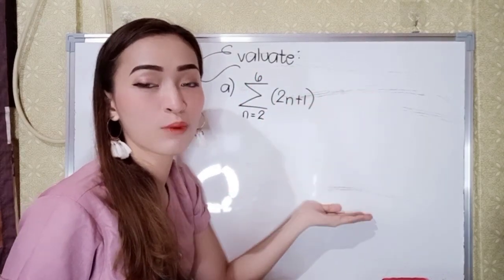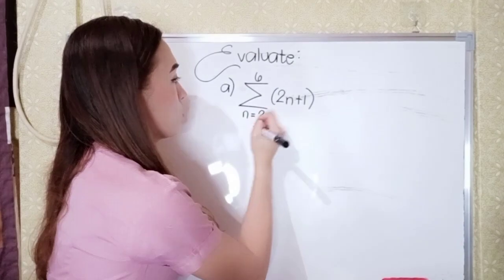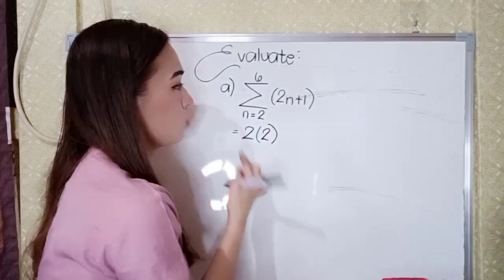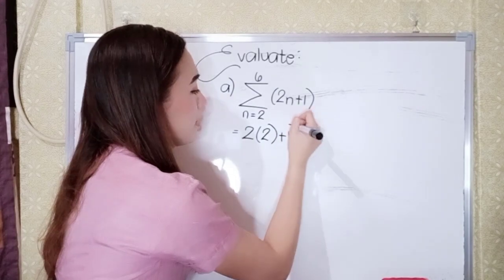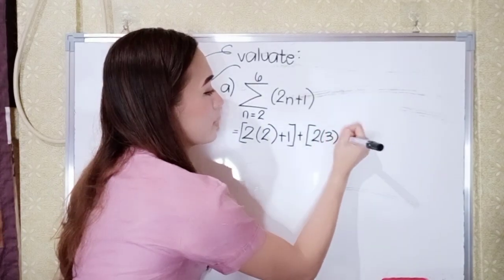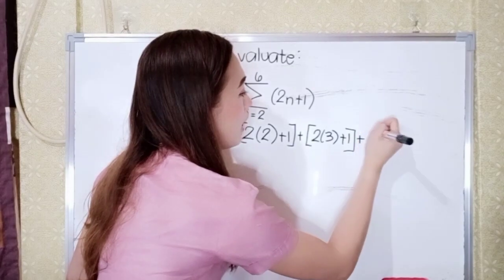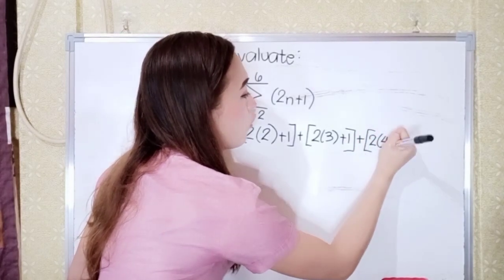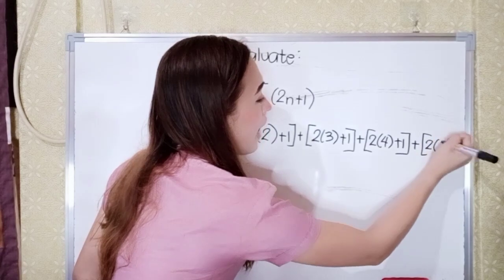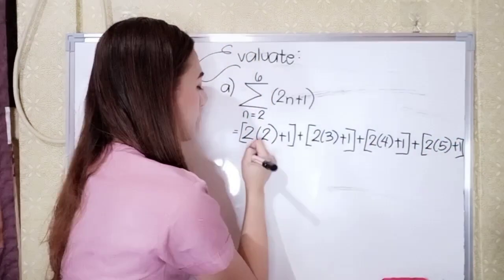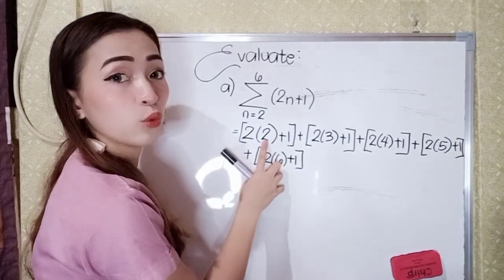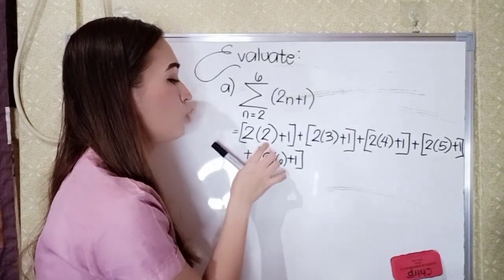I will teach you how to do this. First, just solve this by substituting N from 2 to 6. So that will become: 2 times 2 plus 1, plus 2 times 3 plus 1, plus 2 times 4 plus 1, plus 2 times 5 plus 1, plus 2 times 6 plus 1.